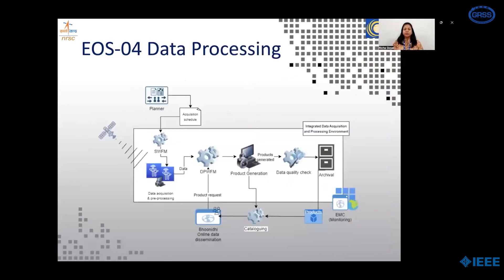The multi-machine ground segment is designed to support the data reception, processing and dissemination of EOS-04 SAR data on ground. The satellite is programmed to acquire user-demanded data and systematic acquisition of Indian coverage. The acquisition schedules are received as input from the Planner to the Workflow Manager for automatic scheduling of acquisition and pre-processing of the data at ground stations. The acquired data is processed to generate predefined products. Post quality check, these products are archived and further catalogued for online dissemination.